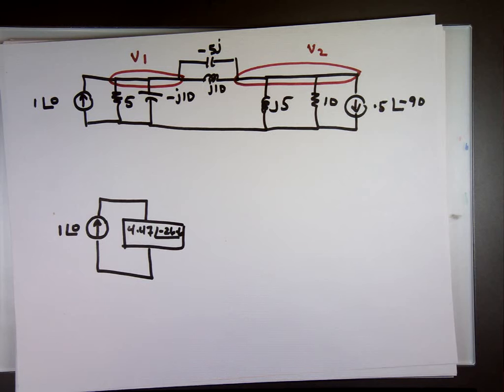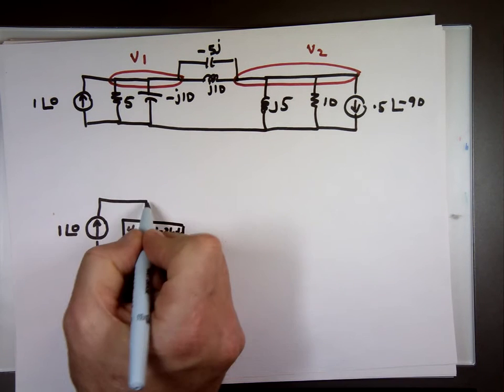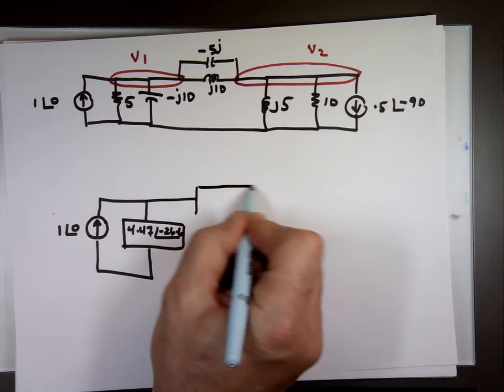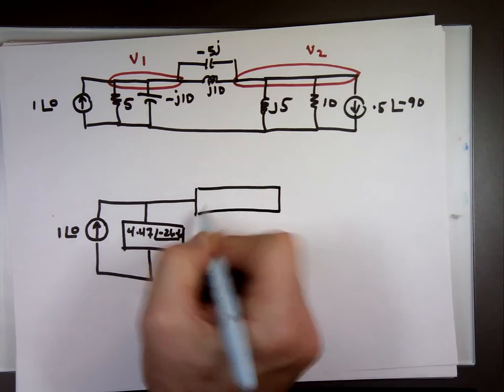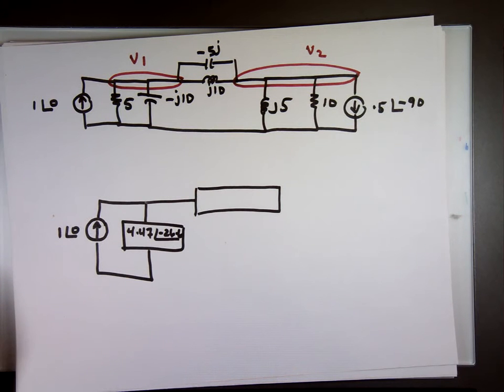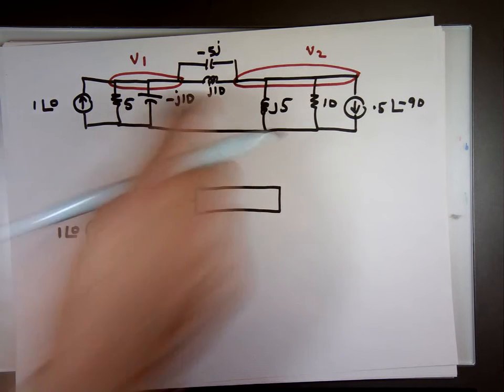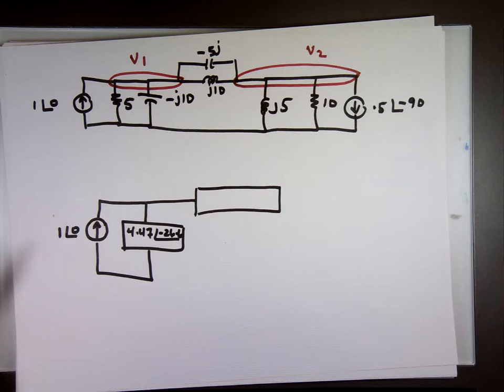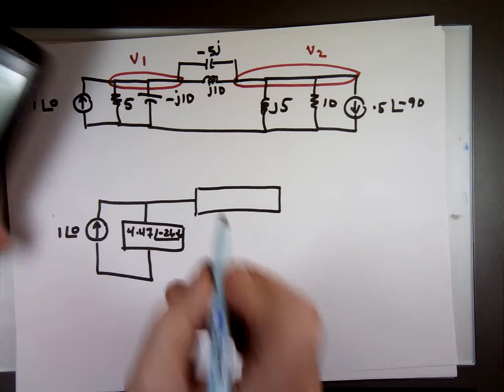I could have made it rectangular mode, it's no big deal. These two in parallel, the product over the sum again, that will be 0 comma negative 5 times 0 comma 10, divided by the sum which is 0 comma 5j. And this is 10 angle negative 90.